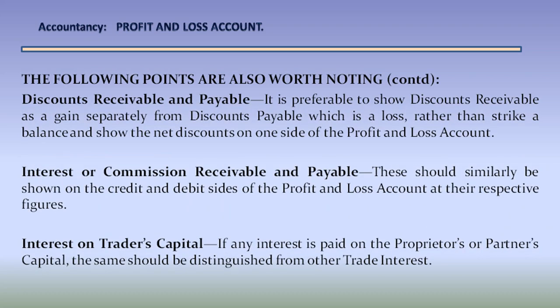Discounts receivable and payable: it is preferable to show discounts receivable as a gain separately from discounts payable, which is a loss, rather than strike a balance and show the net discounts on one side of the profit and loss account. Interest or commission receivable and payable: these should similarly be shown on the credit and debit side of the profit and loss account at their respective figures.